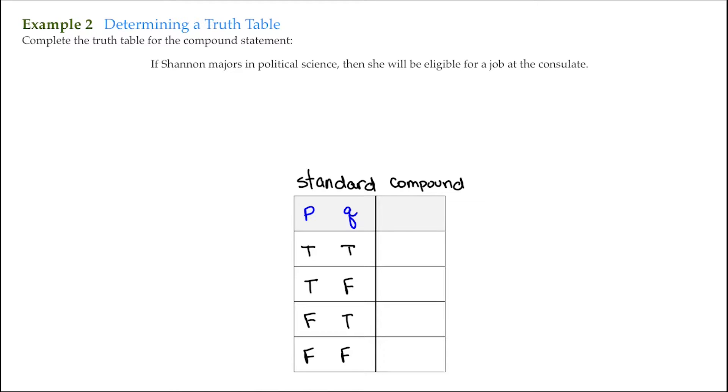So for this example, we continue building the truth tables for these compound statements. So for this compound statement, we can see we have if Shannon majors in political science, then she will be eligible for a job at the consulate.